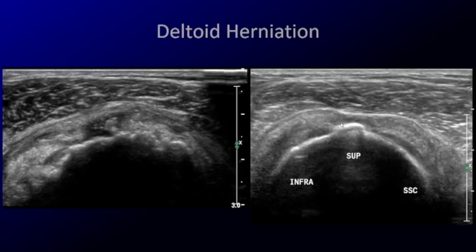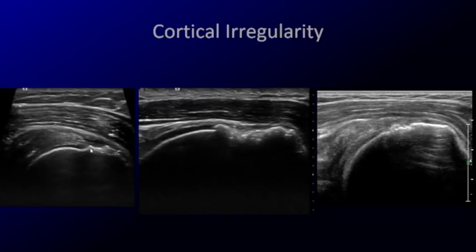Many times, where the tendon tear is, the underlying bone will also be irregular. So these are obvious tears. Here we're missing the entire layer of rotator cuff. Here we're missing the rotator cuff at its insertion site, and the tendon is retracted — another example of the same. You can see that the underlying cortex is very irregular in all three cases.